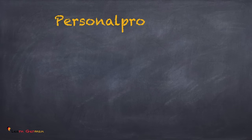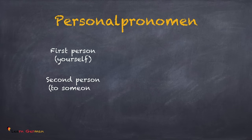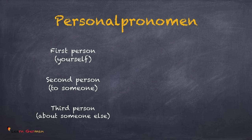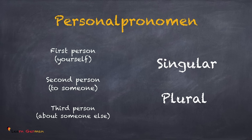There are a few things we need to know before we start. There are three persons you need to consider when using personal pronouns. When you're talking about yourself, you are the first person. While talking to someone, that someone becomes the second person. And while talking to someone about someone else, that person is the third person. For each of these three persons, there can be a singular form and a plural form of the pronoun.